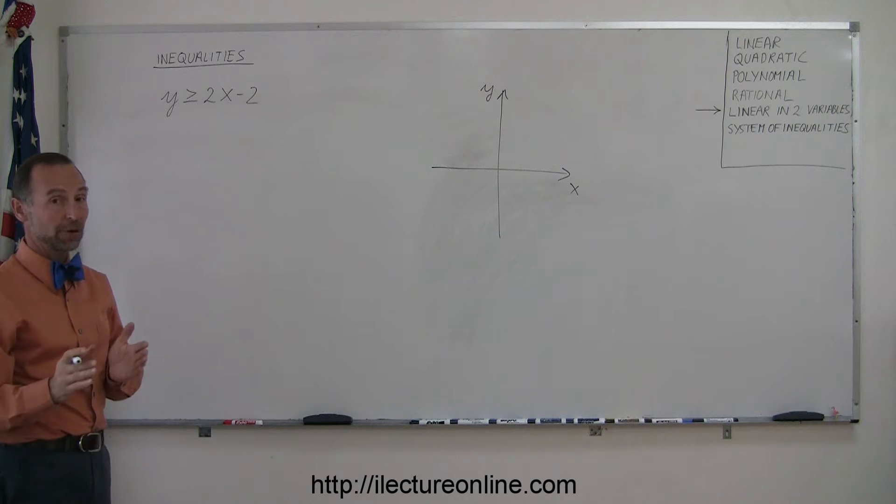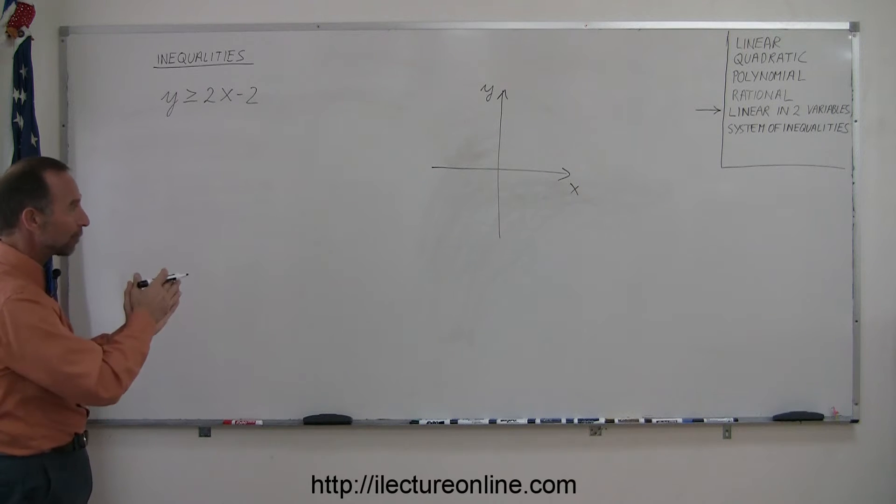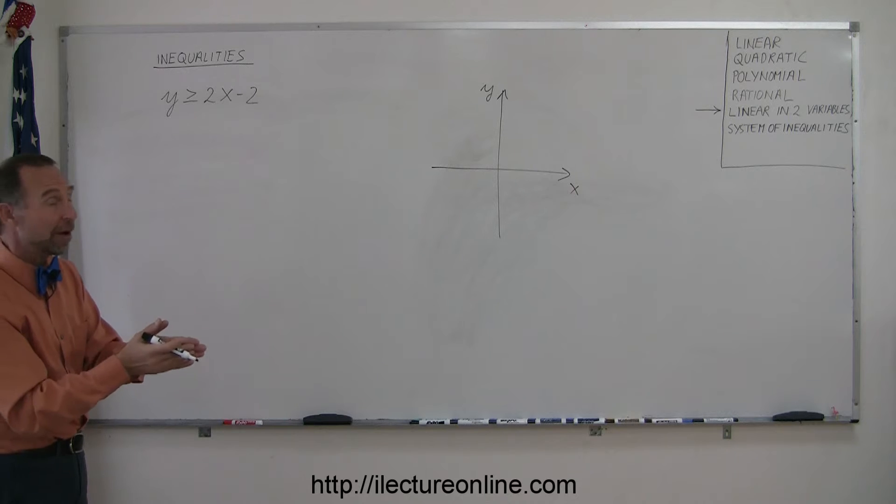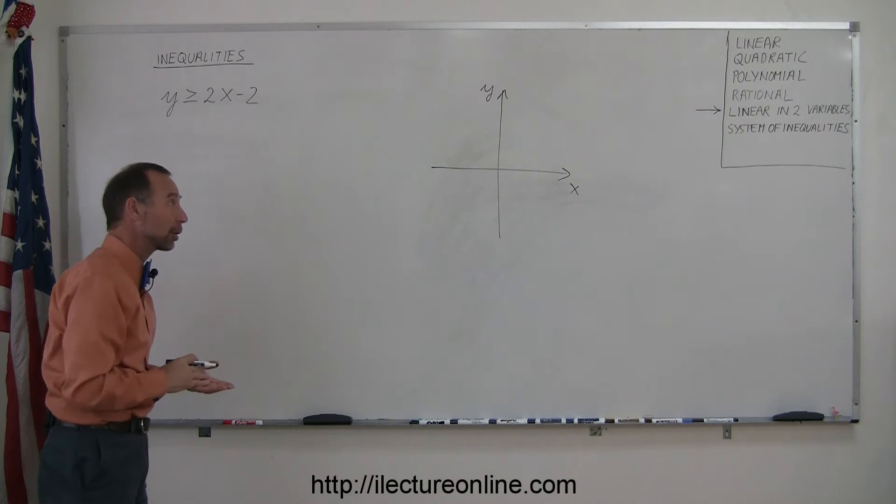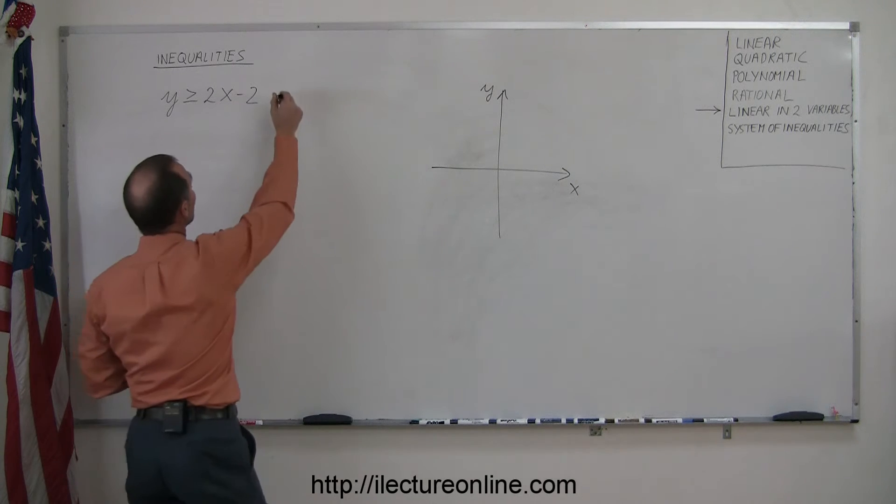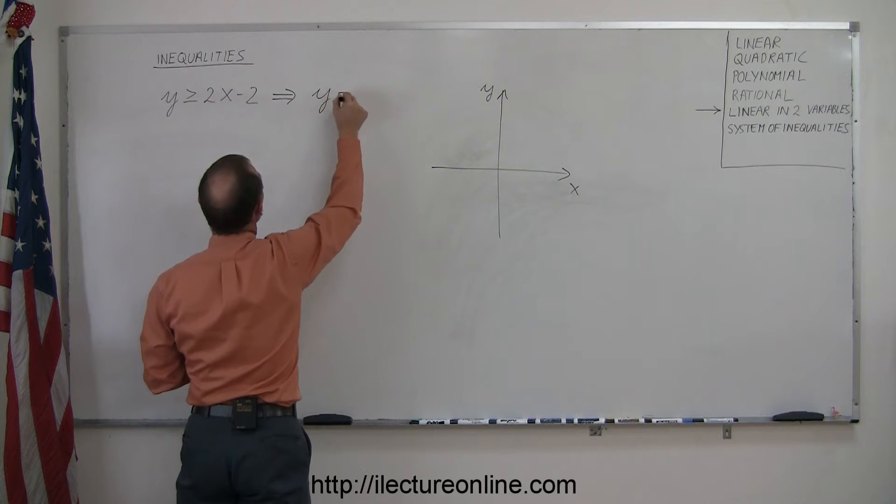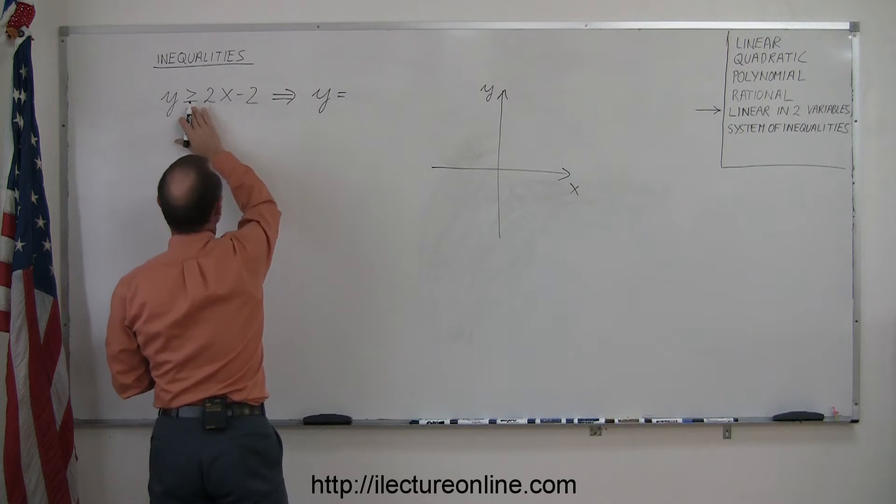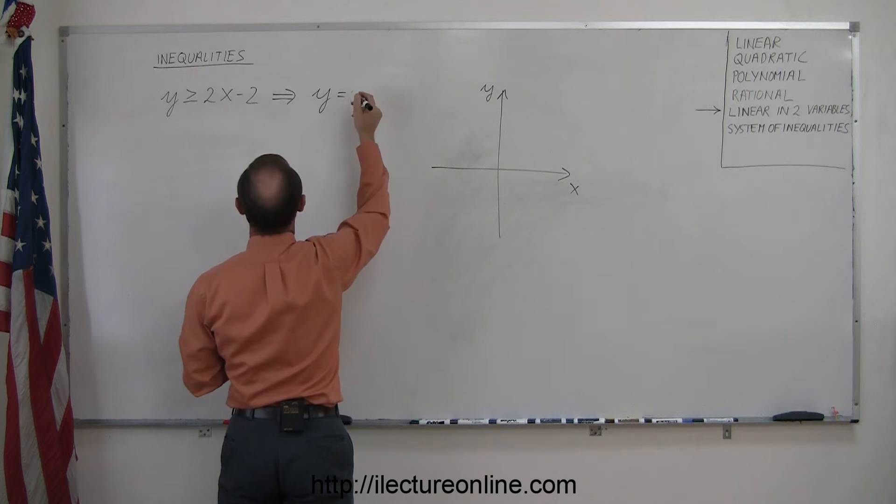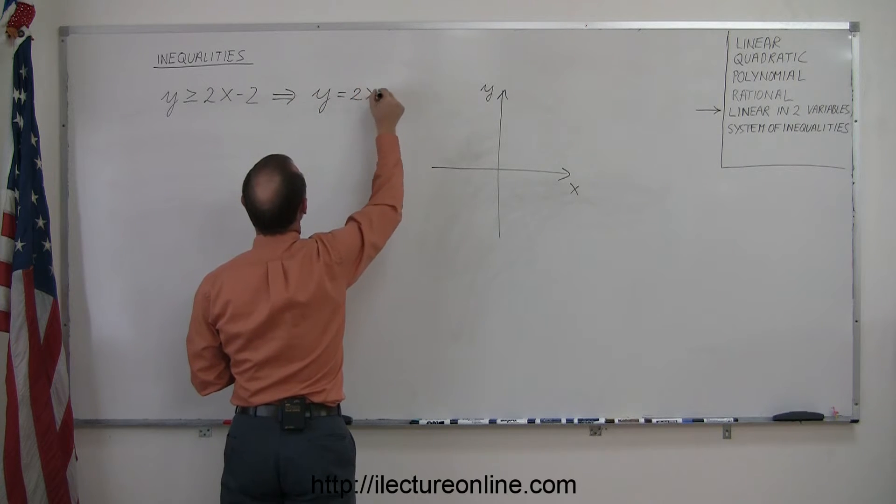To find the region, we first want to find the delineation, or the boundary between the region that satisfies and the region that does not satisfy the inequality. To do that, we're going to take our inequality and write it as an equation, replacing the greater than or equal to sign with just an equal sign, so we write y = 2x - 2.